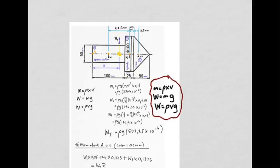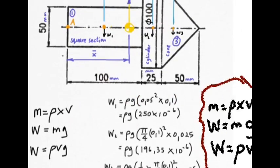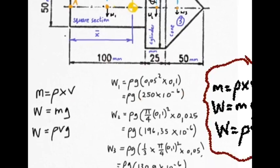So to find the weights of the individual pieces, remember that mass is density times volume, and weight is mass times gravitational acceleration. So therefore weight is density of the material times volume of the object times g. With that in mind, the weight of portion one would be its density times g times the volume. What is the volume of number one? Well, it is 0.05 by 0.05 at its base times 0.1 long. It's a rectangular shape. So the weight would be rho g times the number in brackets.